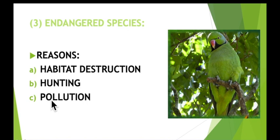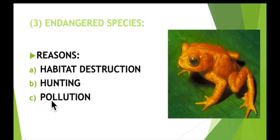Pollution can also cause species to become endangered. The addition of extra carbon dioxide and methane to the atmosphere is causing climate change, and as temperatures rise, organisms with adaptations for a particular environment may no longer be well adapted. This is especially true for species that require cold conditions — for example, polar bears need large areas of sea ice on which to hunt seals, but as ice caps melt they may be left without a habitat. Climate change is thought to be one of several factors that brought about the extinction of species such as the golden toad.